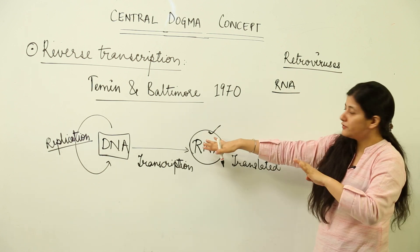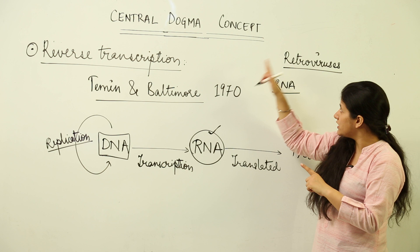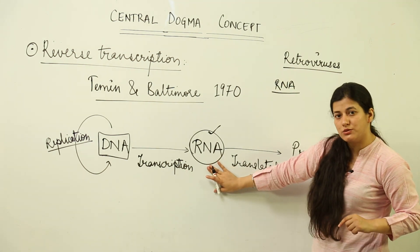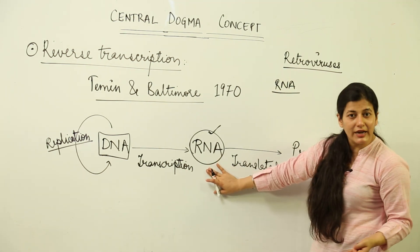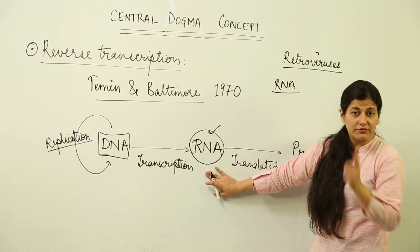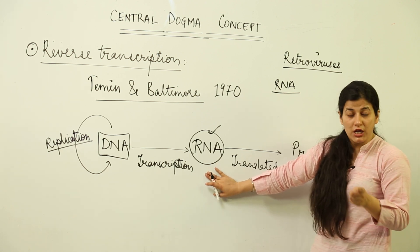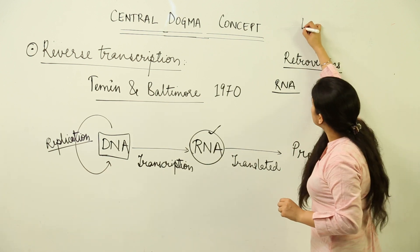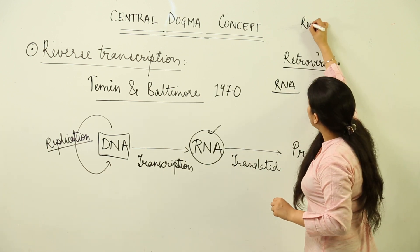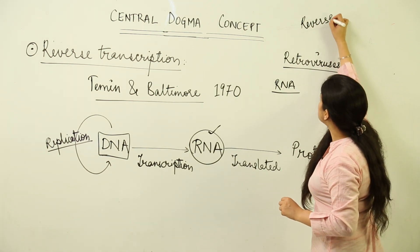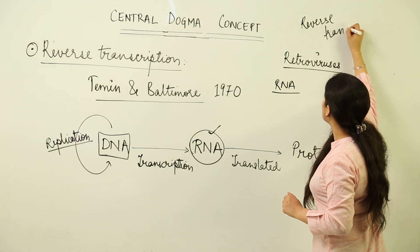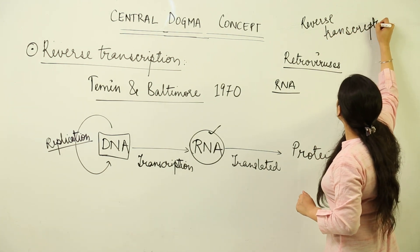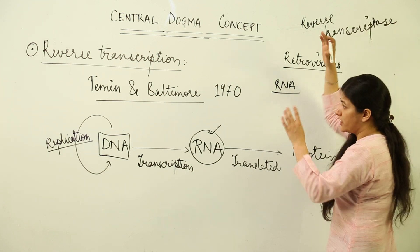Hence the name retro — retro means old, RNA is old, so they have an older form of genetic material, or an older form of nucleic acid, as their genetic material. Hence they are retroviruses. Now what do these RNA viruses do? They do not have a self-replicating genetic material, so they have a machinery where they have an enzyme known as reverse transcriptase.